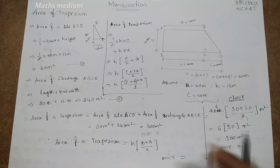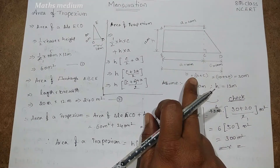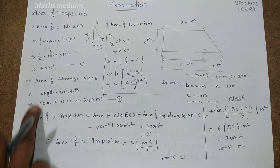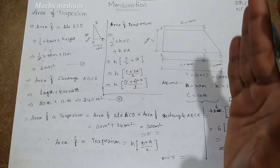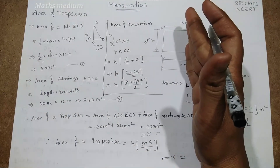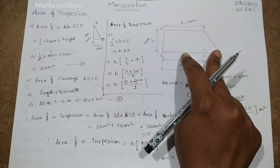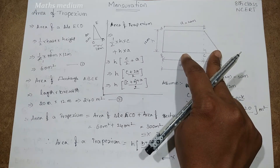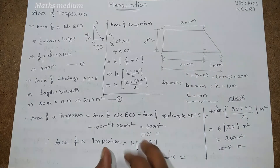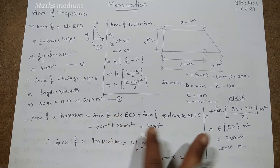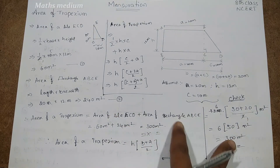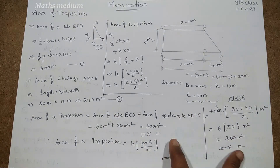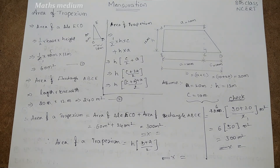So this is the direct formula. We also showed it by splitting into one triangle and one rectangle and combining their areas — both methods give the same answer. If you have any doubts, comment in the comment section. Please click the like button, share my videos, and subscribe to my channel. Thank you.